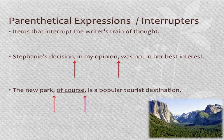Another important use of the comma is what we call parenthetical expressions, or interrupters. These are items that interrupt the writer's train of thought. When we translate verbal things to writing, we call them parenthetical expressions because they interrupt the flow of the sentence. For example, 'Stephanie's decision, in my opinion, was not in her best interest.' The phrase 'in my opinion' is not necessary for the sentence and gets commas around it. Similarly, 'The new park, of course, is a popular tourist destination' — 'of course' interrupts and needs commas placed around it.